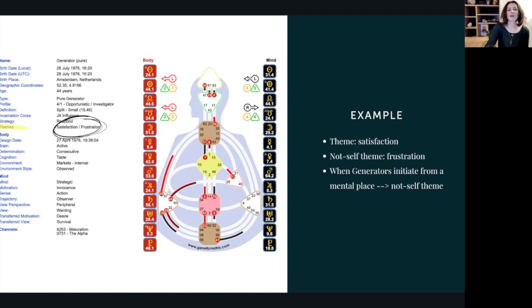So the themes, this is what a genetic matrix calls these elements, you can call it the, sometimes you will find the not self theme literally. But this is all about what you feel when you are either aligned or when you are not aligned. So satisfaction is what generators feel when they are making their choices based on their inner authority, when they're following their inner guidance and spend their energy only on the things that are right for them. But if they don't, if they get out of alignment, because they say yes to projects that they didn't check with their inner authority and in the end might be that these projects weren't really for them to spend energy on, they get into a frustration mode.